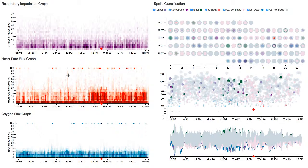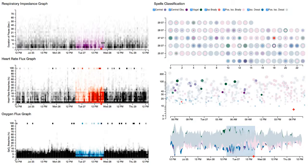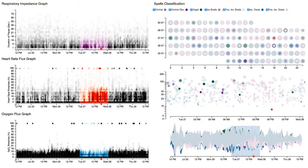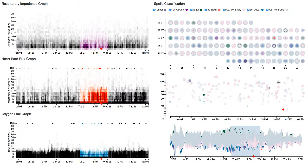PhysioX also allows the analyst to perform interactive coordinated brushing to highlight regions of interest across all charts. Here you see that the analyst has highlighted 24 hours prior to the suspicion of infection. The respiratory impedance graph shows not very many events. The heart rate flux graph shows some highly fluctuating events. The analyst then moves on to the sequence graph to see the events that occurred prior to the suspicion point, then moves to the linear graph and zooms in on the regions just before the point of suspicion to get deeper insight into the events that occur.